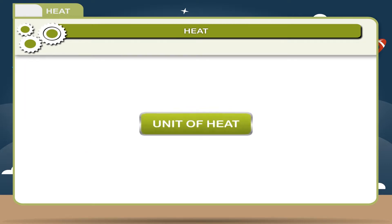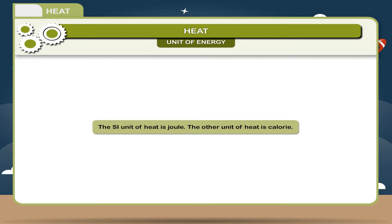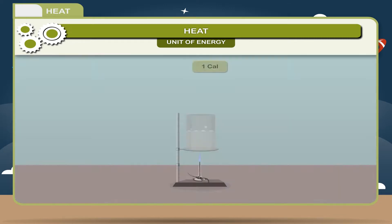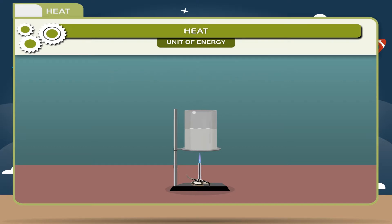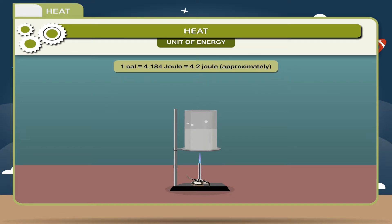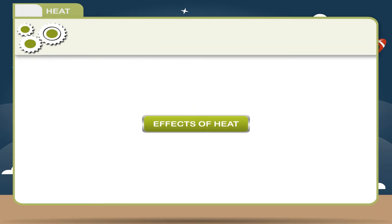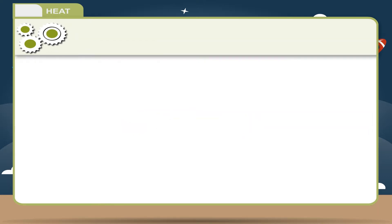The SI unit of heat is Joule. The other unit of heat is calorie. One calorie can be defined as the quantity of heat required to raise the temperature of 1 gram of water by 1 degree Celsius. One kilocalorie is equal to 1000 calories. One calorie is equal to 4.184 Joule, which is approximately 4.2 Joule.